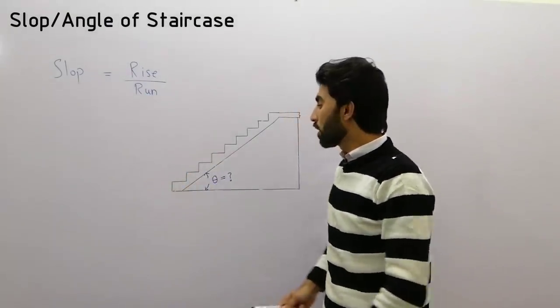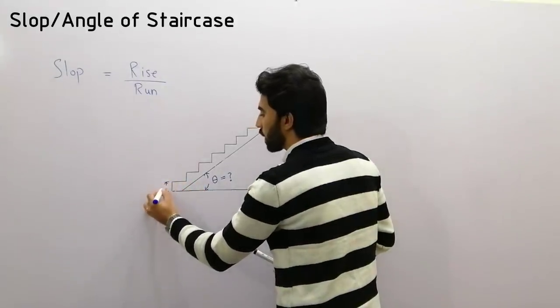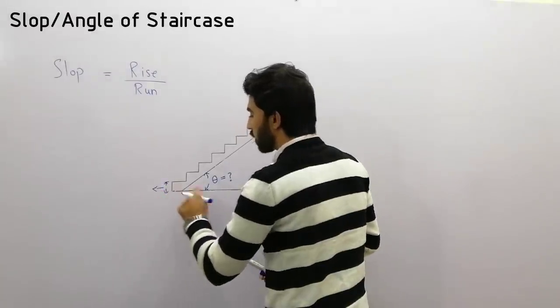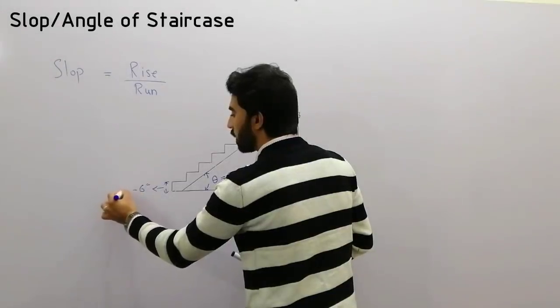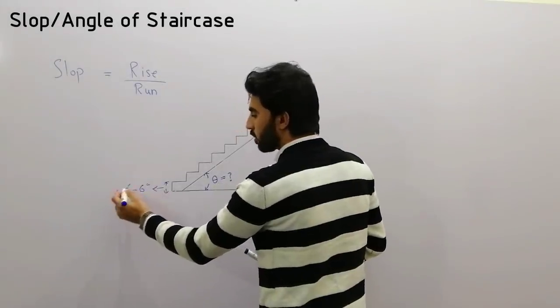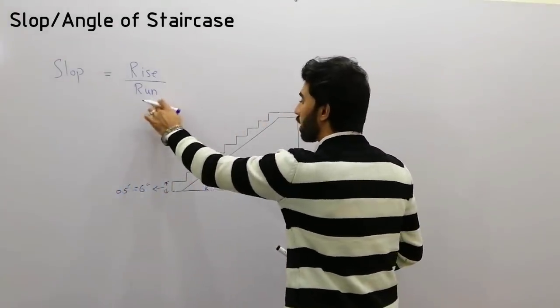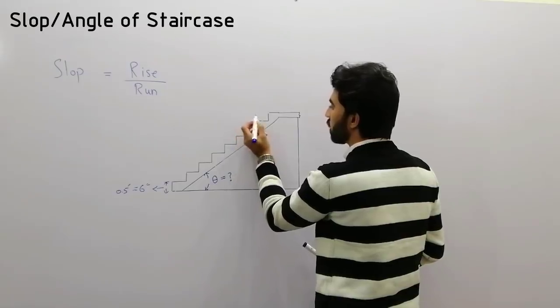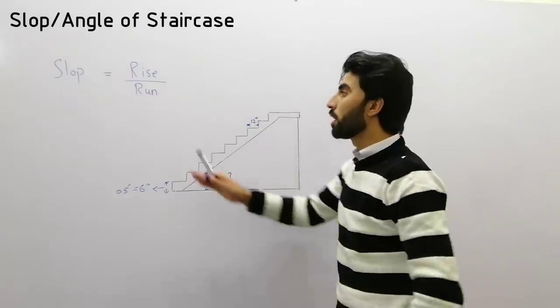If I have to find the angle of a staircase, the riser for this staircase is 6 inches or 0.5 feet. The run, which is called the tread in staircase terminology, is 12 inches. Now we can find the angle.